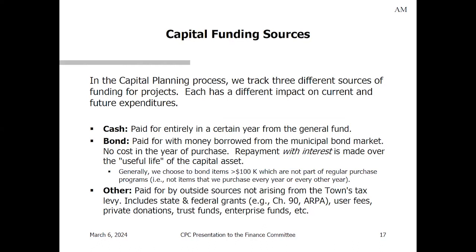Capital funding sources: the two main sources are cash and bonding. Cash comes entirely out of unallocated funding — we just pay for something up front without borrowing. Bonding is typically for anything costing over $100,000. There are certain items we cannot borrow for under state law, so we interface with bond counsel to verify eligibility and borrowing duration. All borrowing durations are baked into the capital plan and inform out-years debt service. A third category called 'other' includes grants, Chapter 90, and user fees.